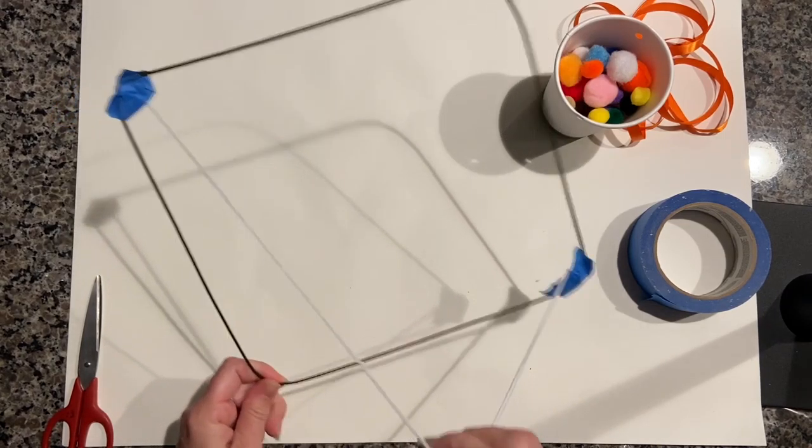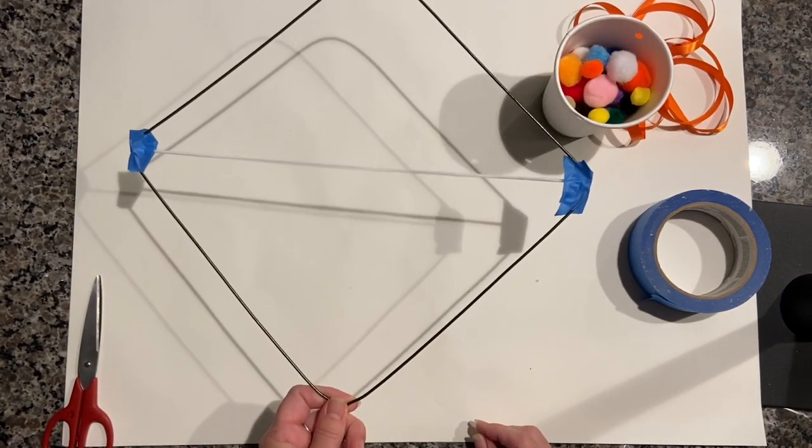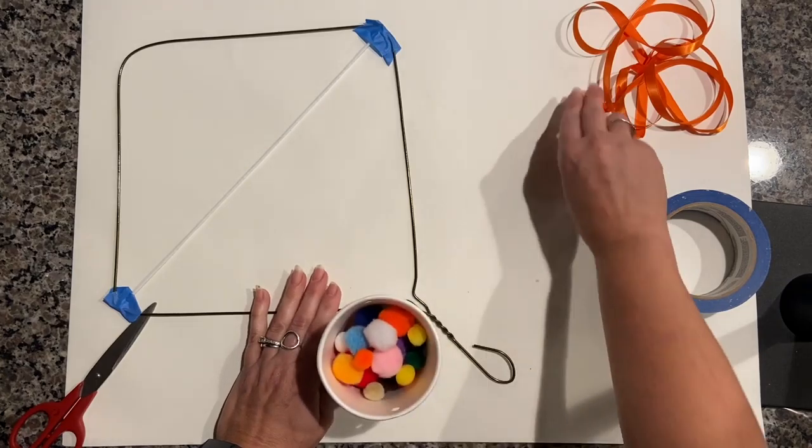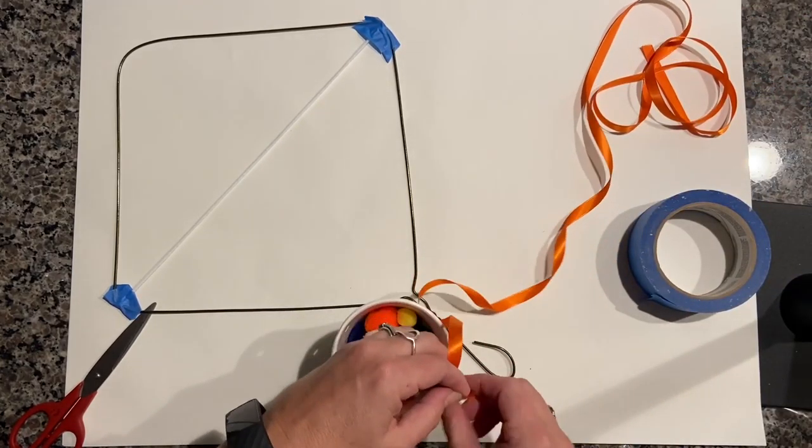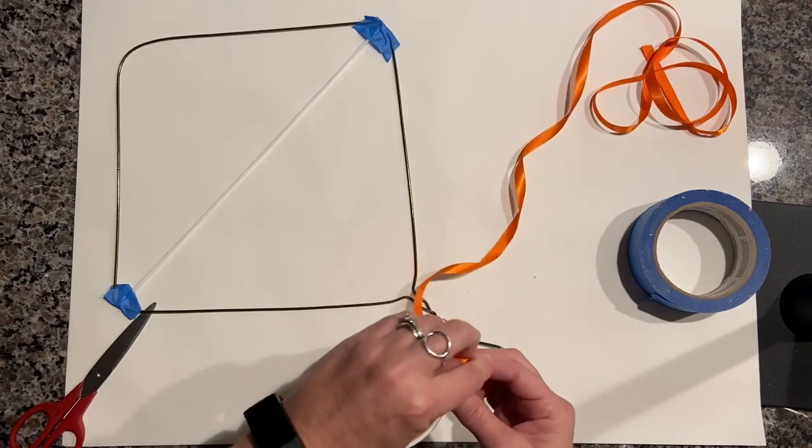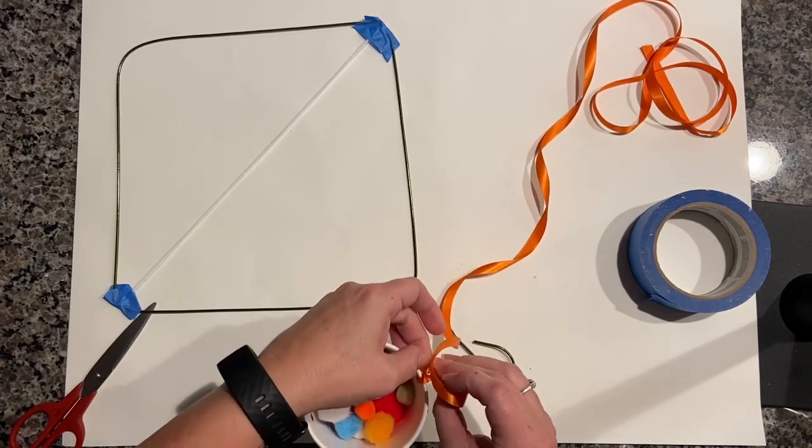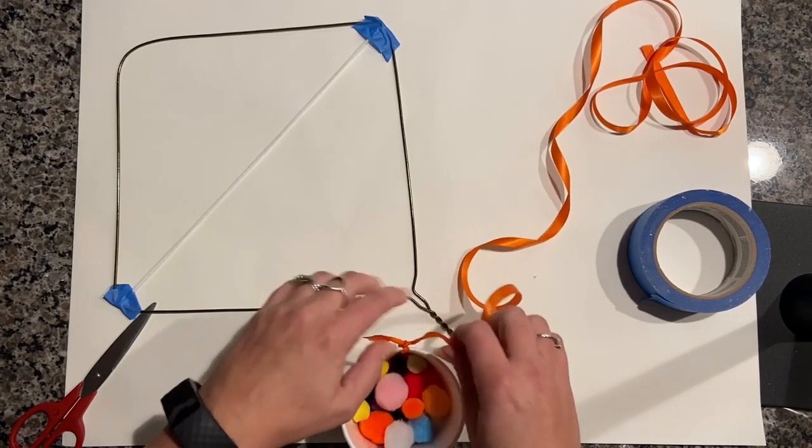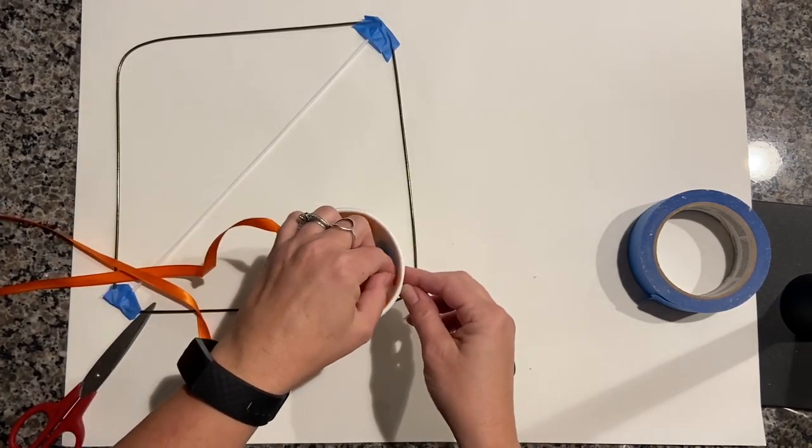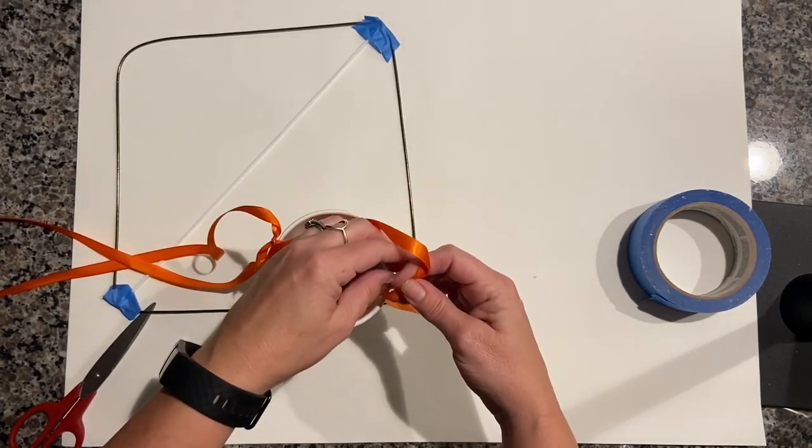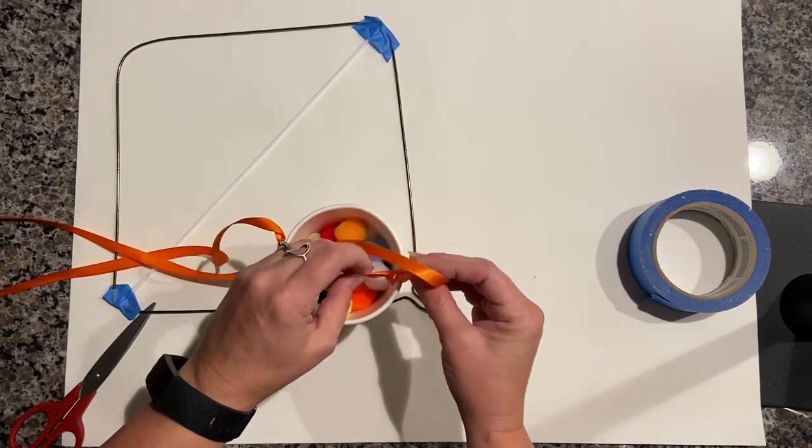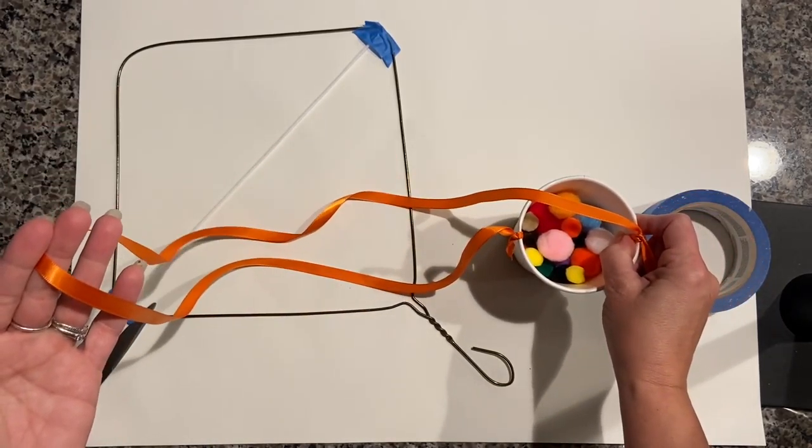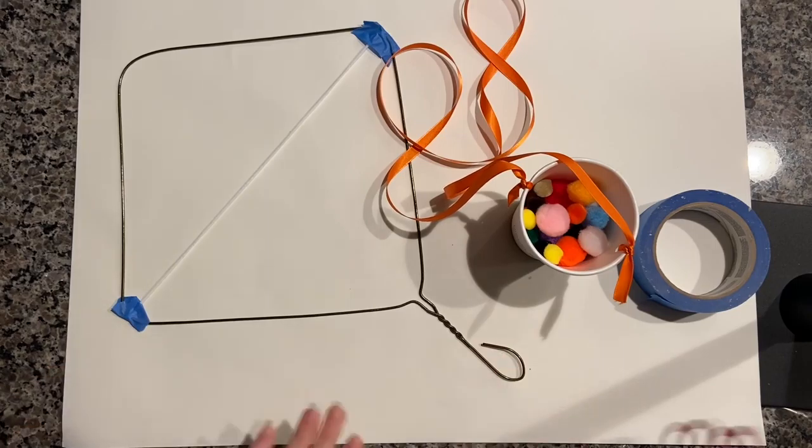And now we're ready for our pom-poms. Let's make our carrying case for them. I'm just going to tie the ribbon through the pre-punched holes on either side of our cup. And then this will become a very easy to use sling over the shoulder holder for my pom-poms.